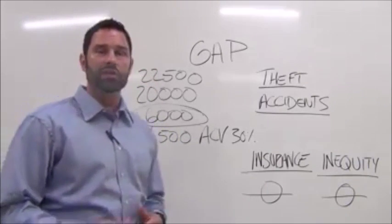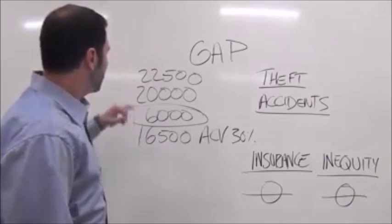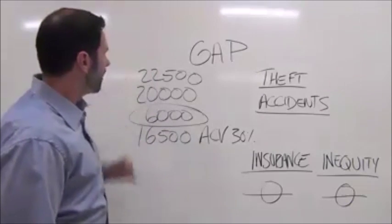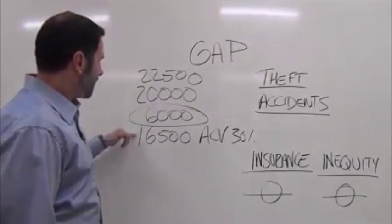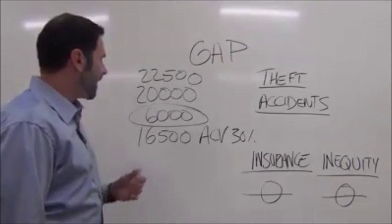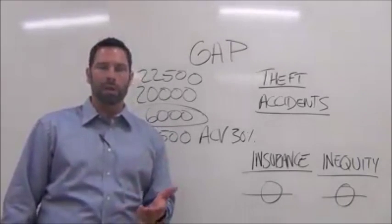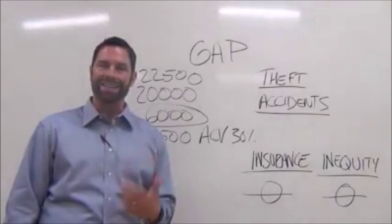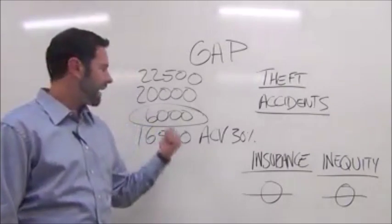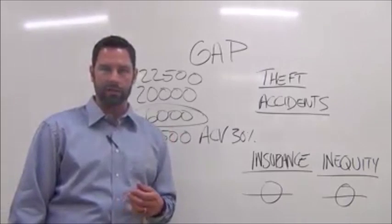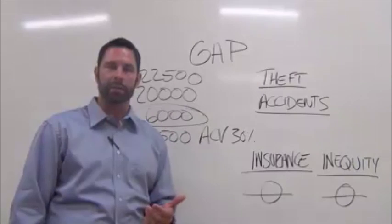Second thing, and most importantly, is what's called inequity. And here's the deal. So again, you owe $22,500 on the car. The insurance company gives you $16,500. Guess who gets to come up with the $6,000? You do. And God forbid you're trading a vehicle that has negative equity on it. You got to tack on top of that $6,000. That's what gap insurance comes in and takes care of.